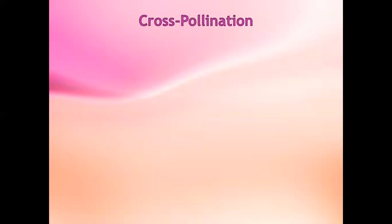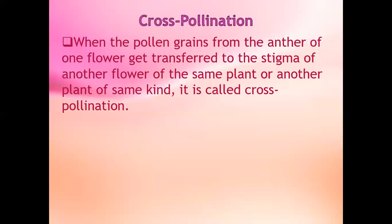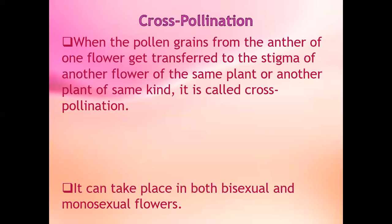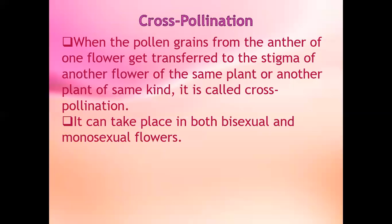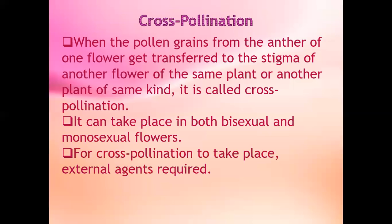When the pollen grains from the anther of one flower get transferred to the stigma of another flower of the same plant or another plant of the same kind, it is called cross-pollination. It can take place in both bisexual and monosexual flowers. For cross-pollination to take place, external agents are required.